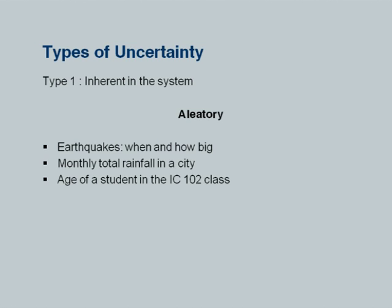Now, since you are going to deal with uncertainties mostly, there are two broad categories. Type 1 is the uncertainty that is inherent in the system. Take the case of earthquakes — we do not know how big or when it is going to be. When you design storm sewers, you have to know about monthly total rainfall. A simpler example: the age of a student in this class — that is also uncertain. You cannot in a deterministic sense say exactly what the age of a student is going to be. The outcome of this event is an uncertain thing, and this kind of uncertainty which is inherent in the system is known as aleatory uncertainty.